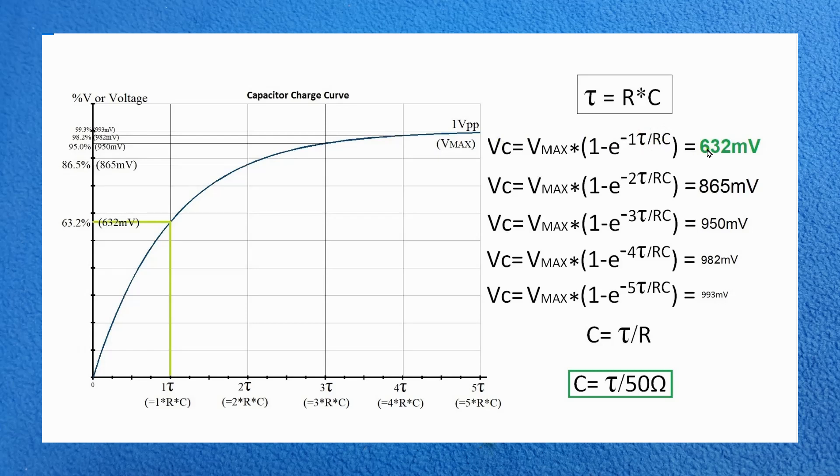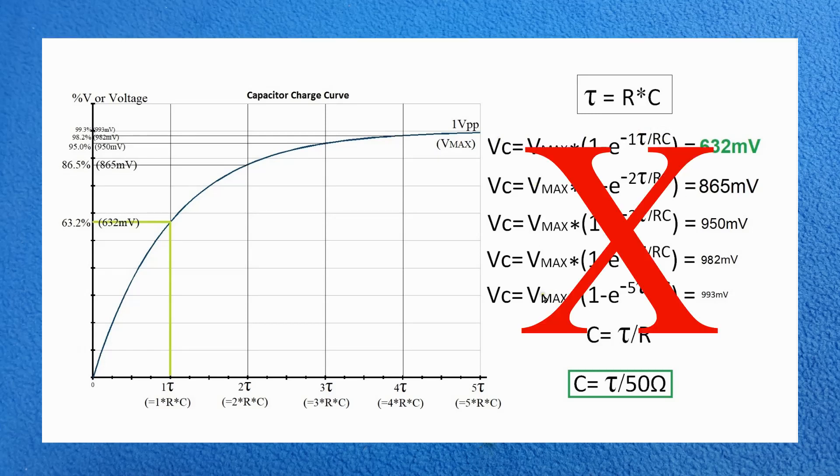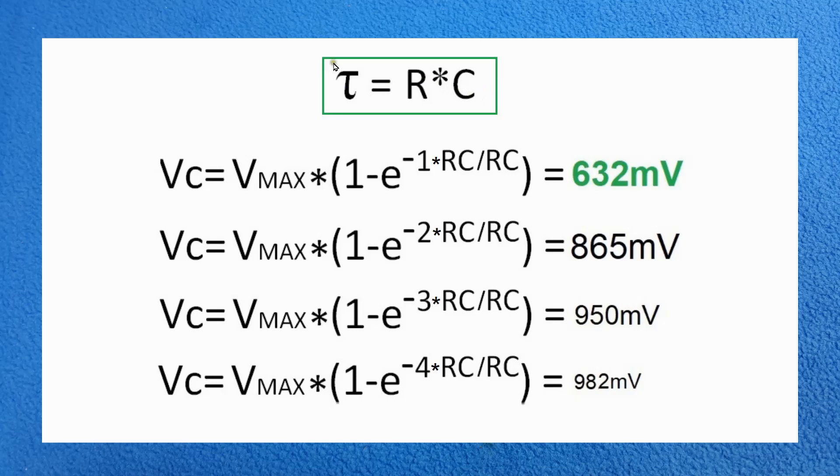Let's forget about these guys for a moment. We said tau equals the resistor times the capacitor, right? And here there was one tau divided by the resistor times the capacitor. So one value divided by the same value equals one. They cancel each other and take the value of one.